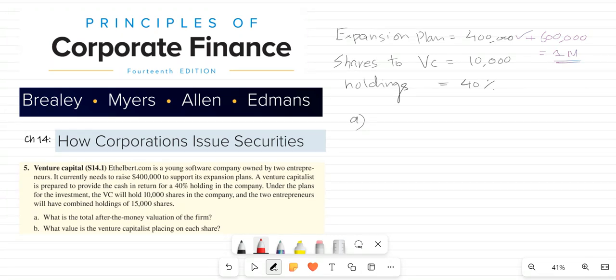For this purpose, we can just use the investment amount and divide it by the holding percentage we are giving to the capitalist. This will give us the post-money valuation for this company, which will be $1 million.